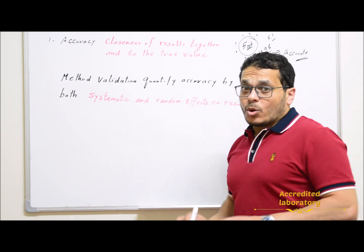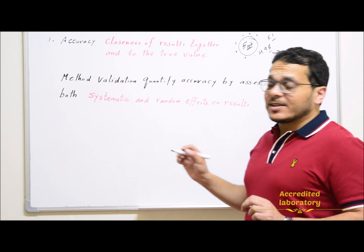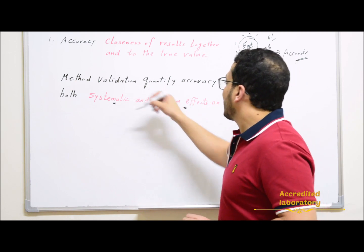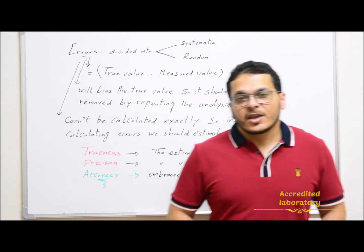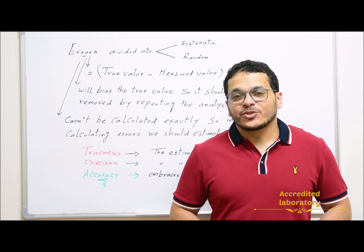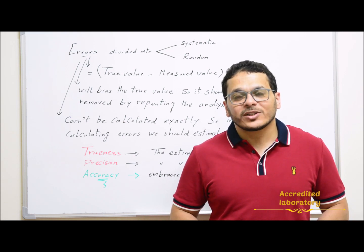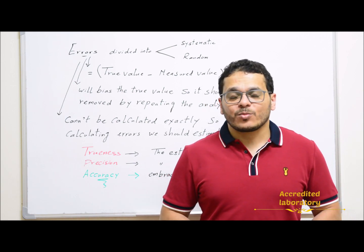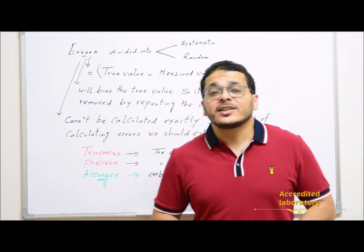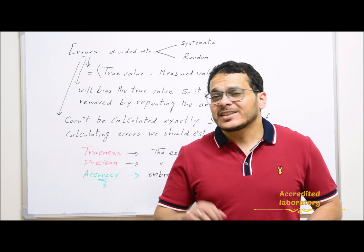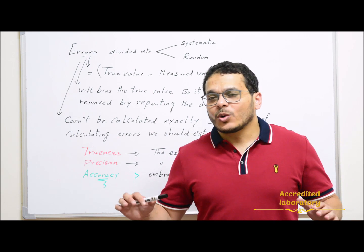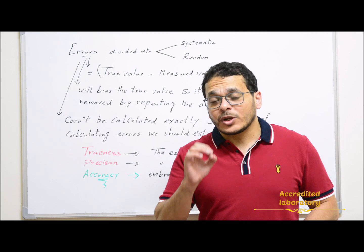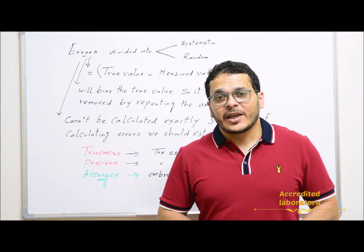In the context of method validation, we quantify accuracy by assessing both systematic and random effects on results. Errors are divided into systematic and random errors that can affect the results, which equal the difference between the true value and the measured value. These errors bias the true value and should be removed.